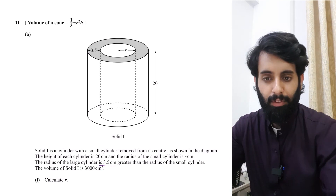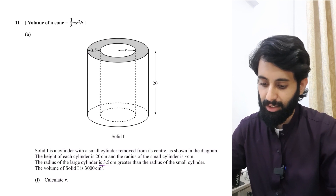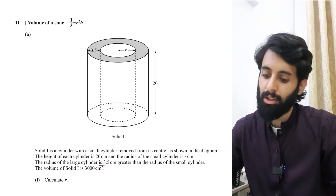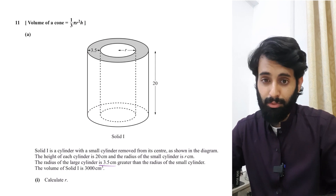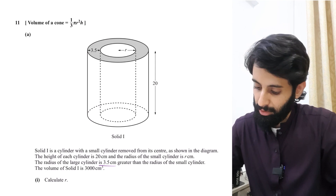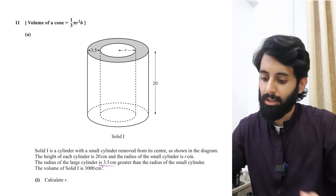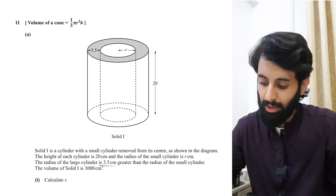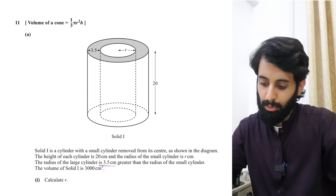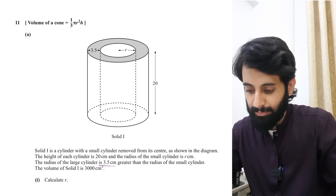Never have a head-on approach with a question where there's so much detail given. This is a very important Paper 2 tip: first break the information down, get yourself familiar with what you're given, and then plan your journey towards the final answer — which in this case is the radius of the small cylinder.